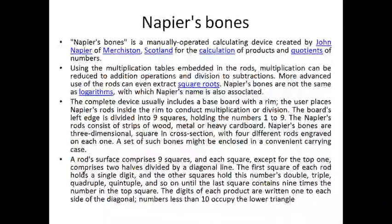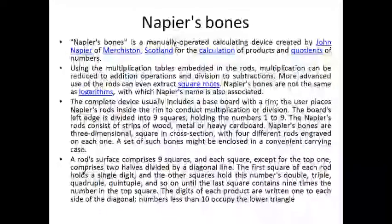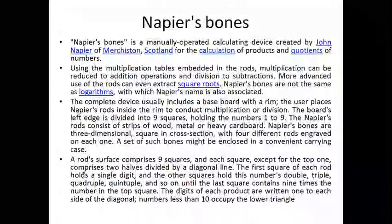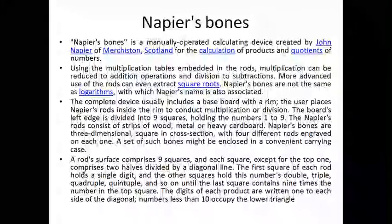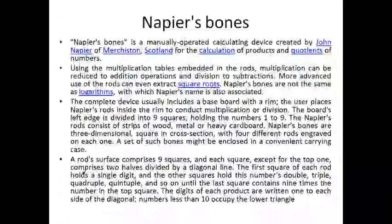After the Abacus, Napier's Bones came. In 1616, Sir John Napier made a calculating device, which was named Napier's Bones.